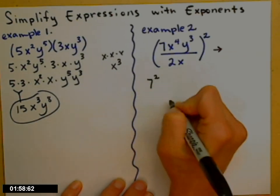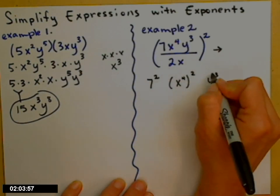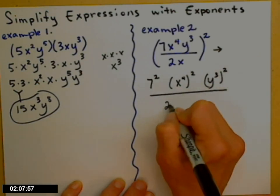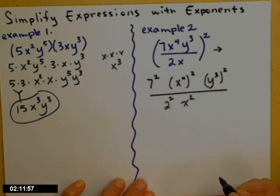So I'm going to have a 7 squared, an x to the 4th squared, a y cubed squared, divided by a 2 squared, and then an x squared on the bottom.